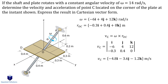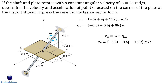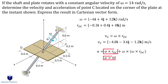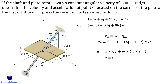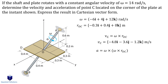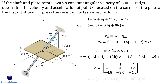Lastly, to find the acceleration, we use the acceleration equation. Notice that the angular velocity given in the question is constant, which means angular acceleration is 0. We already found one part of this equation in the previous step, so we only need to compute the remaining cross product term by plugging in the known values. Solving gives us our final answer for acceleration in cartesian vector form.